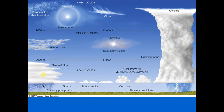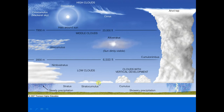Nimbostratus precipitation is also continuous and steady because it often covers the entire sky, so it takes a while before the whole system moves. Nimbostratus also tends to be slower moving. Thin nimbostratus may be confused with altostratus, but one distinction is that nimbostratus is darker gray, and unlike altostratus, nimbostratus will produce rainfall.